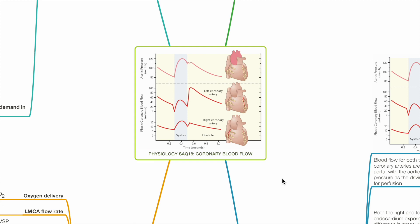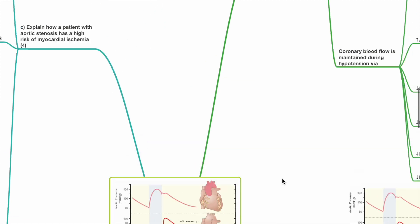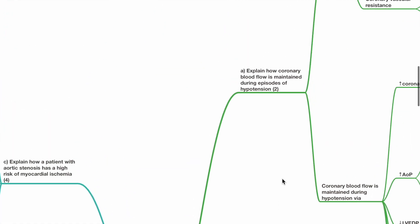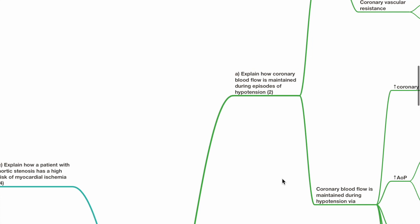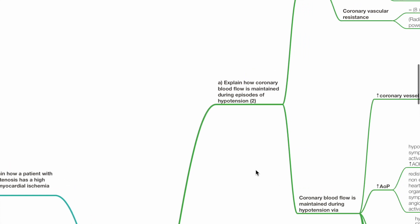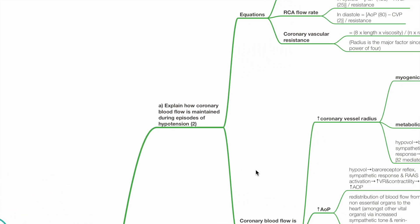Physiology SAQ 18, Coronary Blood Flow. Part A: Explain how coronary blood flow is maintained during episodes of hypotension.